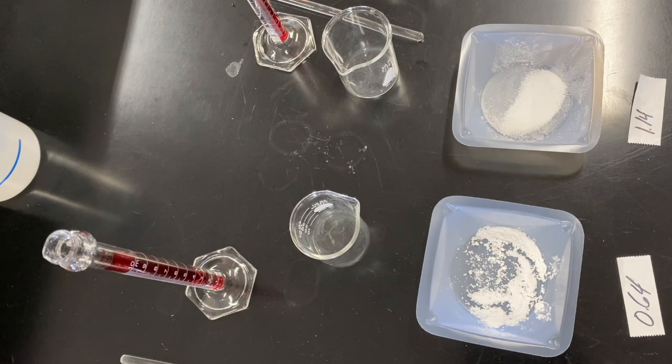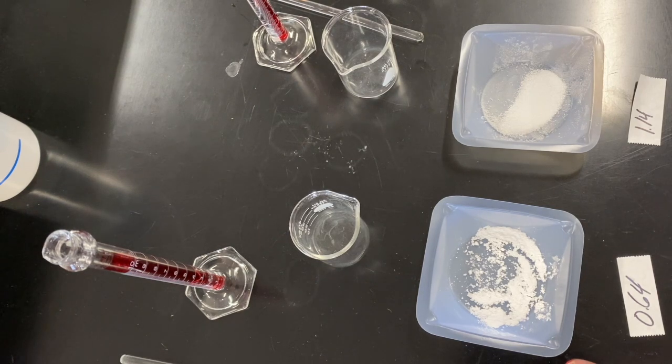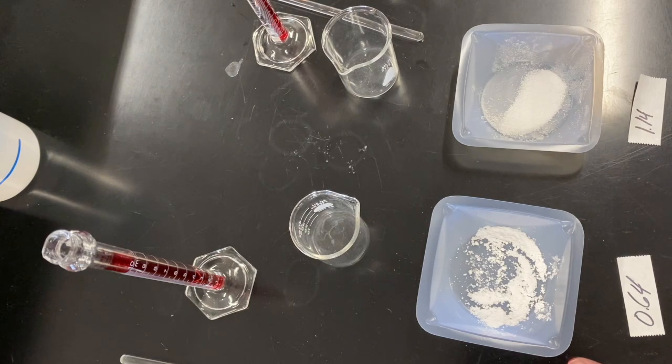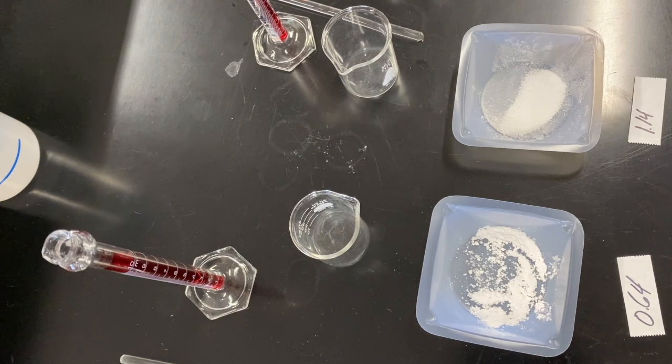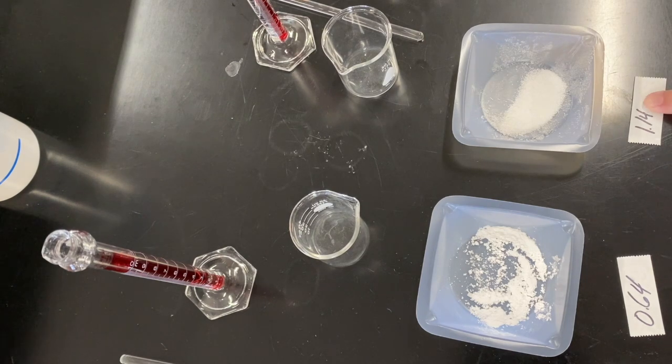So the first thing that we have is we have approximately 0.6 grams of magnesium sulfate. In fact, the actual mass is 0.64 grams. That's what I actually massed out. I also have approximately 1.1 grams of sodium carbonate. The actual mass is 1.14 grams.